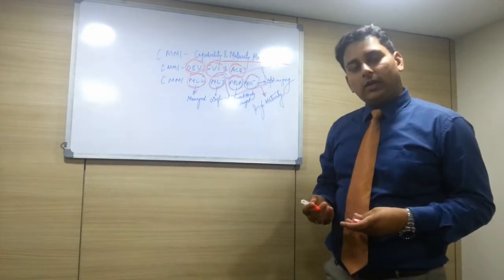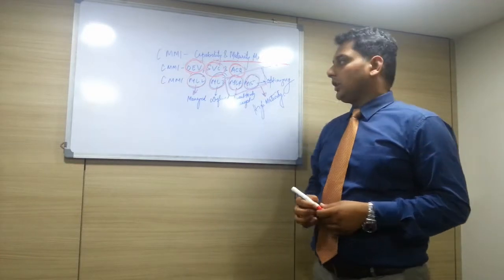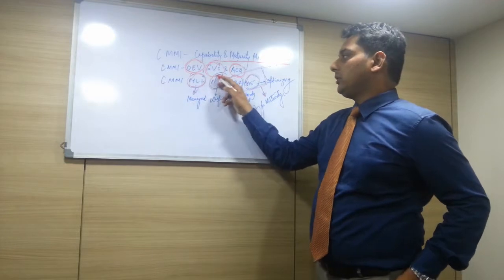CMMI also has 4 Maturity Levels: we call them Maturity Level 2, Maturity Level 3, Maturity Level 4, and Maturity Level 5.